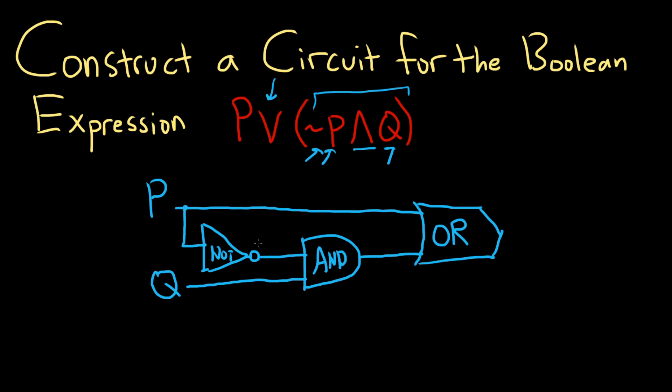So P goes to the NOT gate. That gives us NOT P. And now we have NOT P and also Q going to the AND gate. That gives us NOT P and Q. That's this piece here, right?